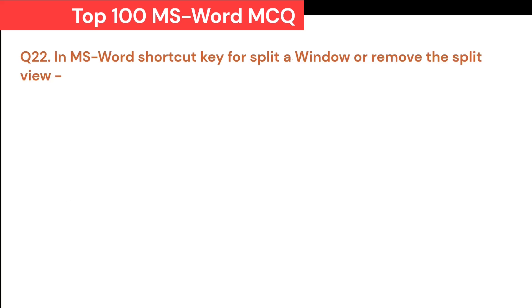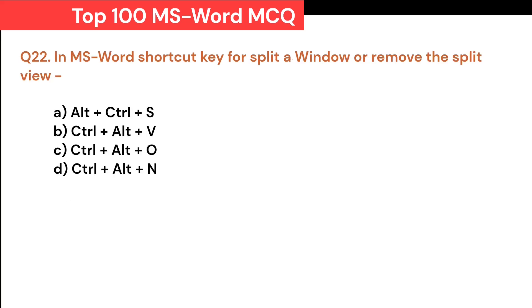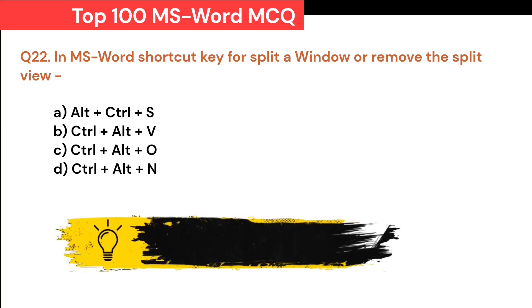In MS Word, shortcut key to split a window or remove the split view: A. Alt+Ctrl+S. B. Ctrl+Alt+V. C. Ctrl+Alt+O. D. Ctrl+Alt+N. Correct answer is A. Alt+Ctrl+S.